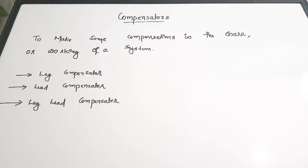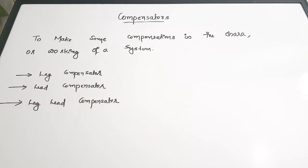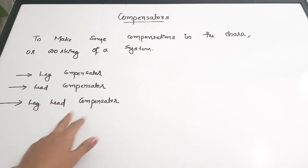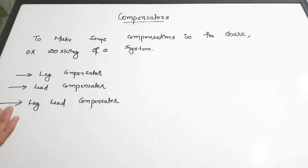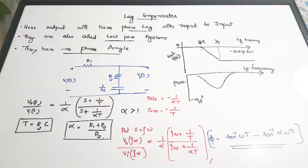The main classification of compensators are lag compensator, lead compensator, and lag-lead compensator. If you have studied compensators in control system you may have heard of phase lag compensator and phase lead compensator, because generally we use compensators to have adjustments in the phase. So let's see in detail about these three compensators from an exam point of view. First we will be discussing about the lag type compensator — its characteristics, its transfer function, and everything.